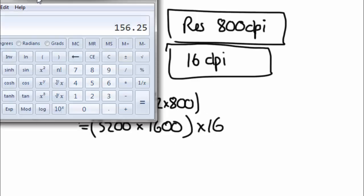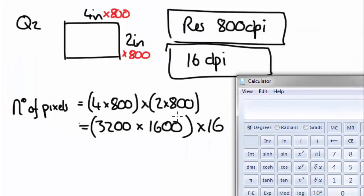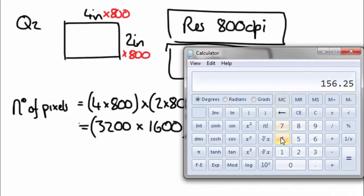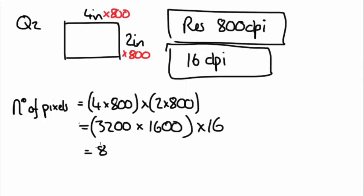And then you multiply that by your color depth, and that will give you in bits. So let's see, 4 times 800, I'll just times it by the 1600. And I'll times it by 1600, so I'll need to do this again. Okay, then times it by 16. That equals 81,920,000.